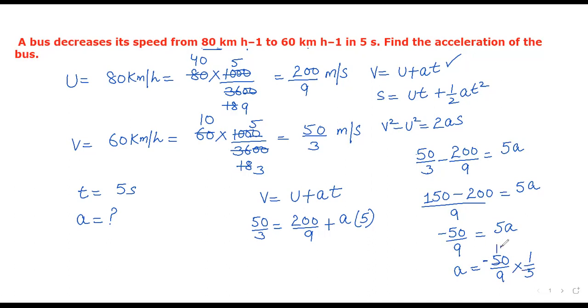So a = -10/9 m/s². Dividing, this equals approximately -1.11 m/s². The acceleration is negative because the speed is decreasing.